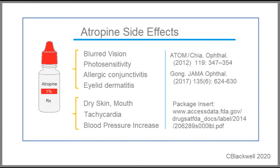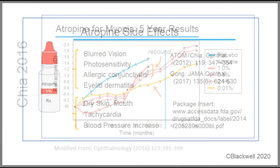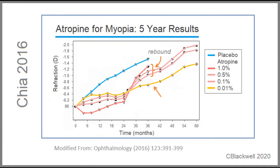Reports of systemic side effects are very rare. In summary, the ADAM studies have shown atropine lowers progression of myopia. What initially looked like an advantage of greater strength turned out to be the opposite, and the lower percentage had the least amount of side effects.